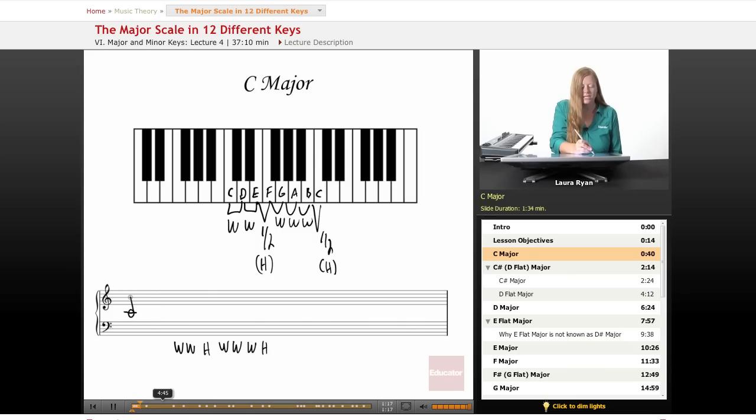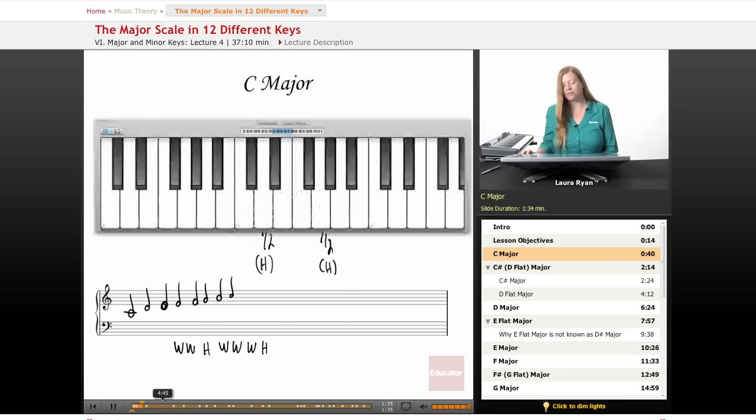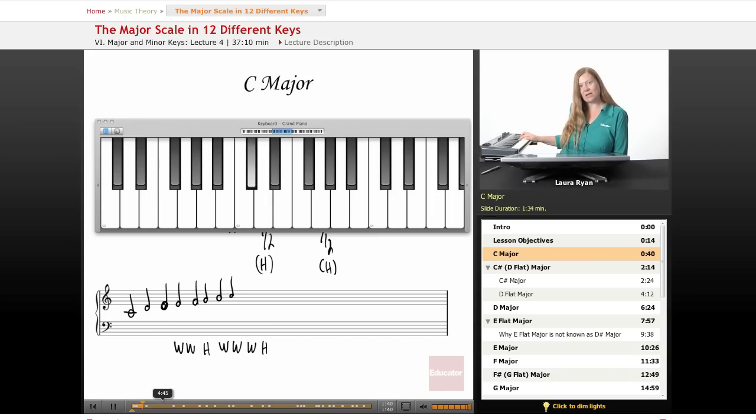Let's begin with middle C and we will copy what we have identified on the keyboard. C, D, E, F, G, A, B, C. Let's listen and really look at the intervals. C to D is a whole step because there's this little black key in between the two of them. D to E, whole step, E to F, half, F to G, whole, G to A, whole, A to B, whole, B to C, half.